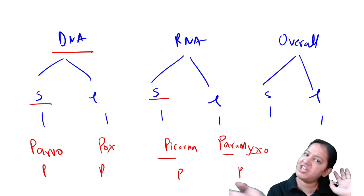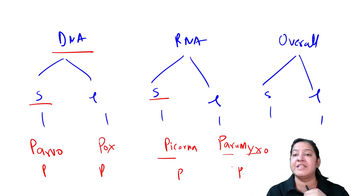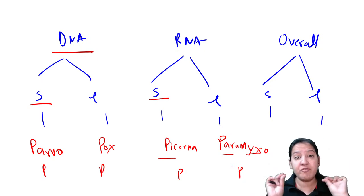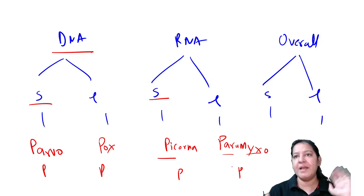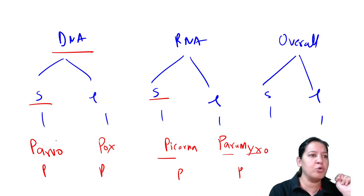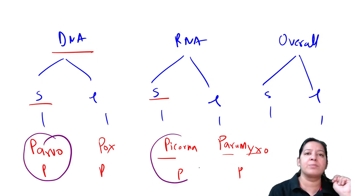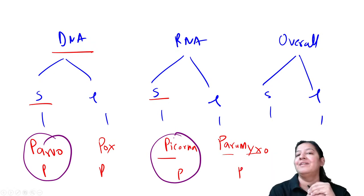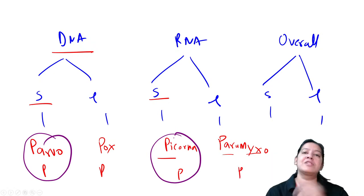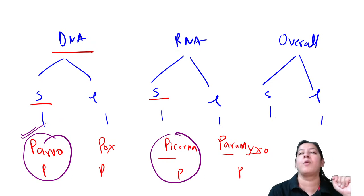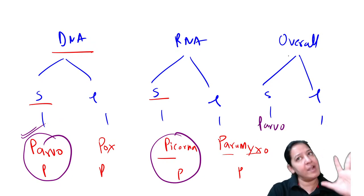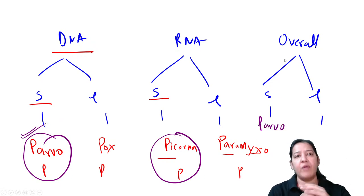Never get confused among the P viruses. Among the two small ones - Parvo (smallest DNA) and Picorna (smallest RNA) - Parvo is more small overall. So the overall smallest virus is Parvo. Among the two large ones - Pox (largest DNA) and Paramyxo (largest RNA) - Pox is larger. So the overall largest virus is also Pox. Both overall extremes come from DNA viruses.